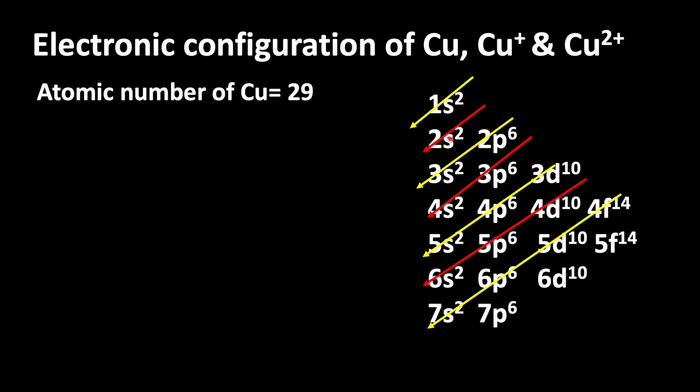Here you can see the filling of orbitals in increasing energy level. It means after filling 1s orbital, electrons can enter into 2s orbital, then 2p, 3s, 3p, 4s, and 3d orbitals. The maximum number of electrons in s orbital is 2, p orbital is 6, d orbital is 10, and f orbital is 14.